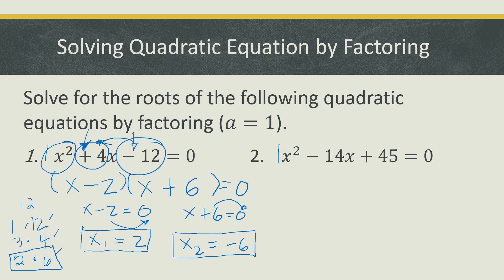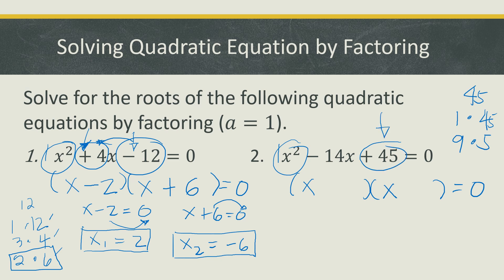Next, number two: x² - 14x + 45 = 0. Same process — factor the first term as x times x, then list the factors of 45: 1×45, 9×5, and 3×15. Since the third term is positive, we need factors of 45 that when added give us 14. The factors 9 and 5 are the best choice since 9 + 5 = 14.